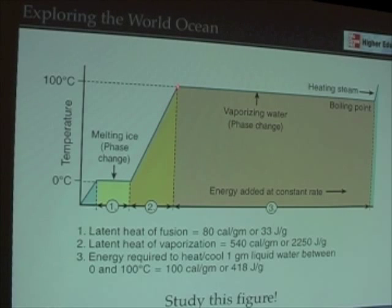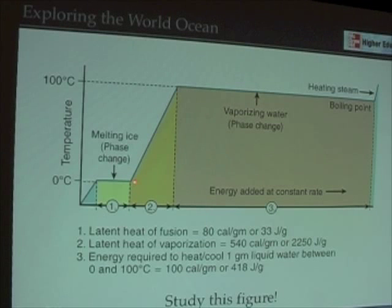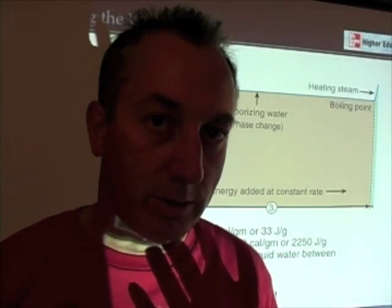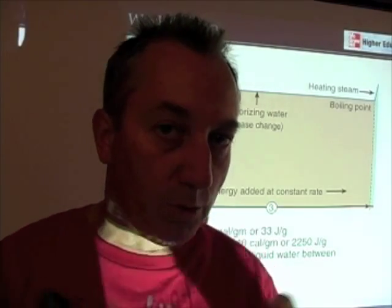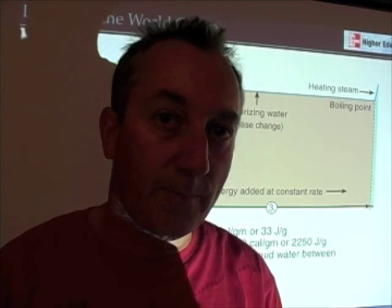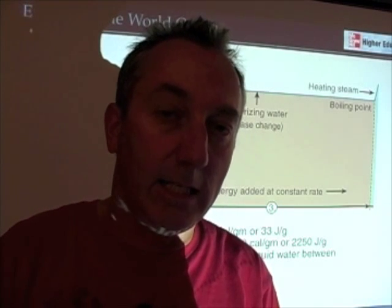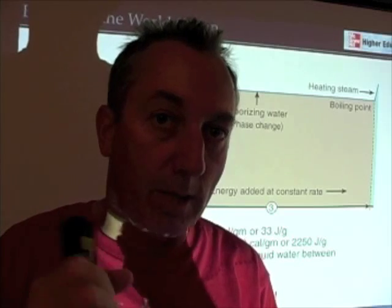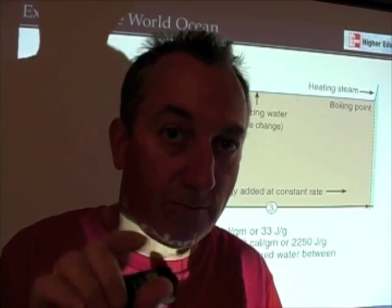As we go from 0 degrees to 100 degrees centigrade, for one gram of water, it takes one calorie per gram — so 100 calories total to raise the temperature of liquid water at 0 degrees to liquid water at 100 degrees. You can actually have liquid water at 0 degrees, because until you remove that 80 calories, it's not ice. And you can have liquid water at 100 degrees centigrade, because until you add that latent heat of vaporization, it's still liquid. You haven't added the energy that changes the physical state of the matter.